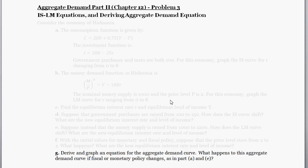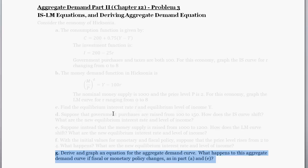Hello and welcome to part 5 of this problem. We're dealing with part G. If you want to check out earlier parts of the video that have built up to this moment, check out the video description. In this question, we're going to deal with the IS-LM model, and we're going to use our IS and LM equations to derive the aggregate demand curve. And then we're going to think about what happens given the fiscal shock and the monetary shock from previous parts. If you want to see those shocks using the IS-LM model, check out the previous videos.